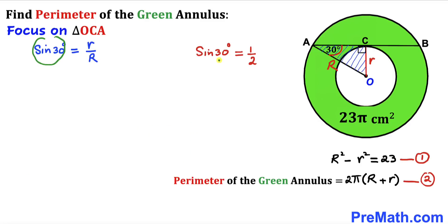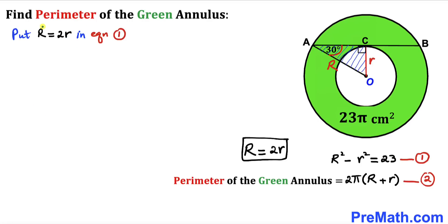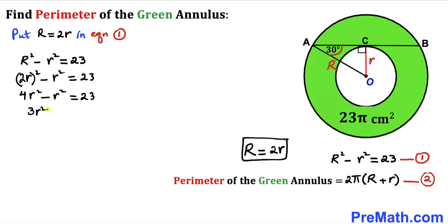Since sin(30°) equals 1/2, we can write 1/2 equals lowercase r divided by uppercase R. Cross-multiplying gives us uppercase R equals 2 times lowercase r. Now let's substitute this value of R equals 2r into equation number one. Replacing uppercase R with 2r, the equation becomes (2r) squared minus r squared equals 23, which gives us 4r squared minus r squared equals 3r squared equals 23.